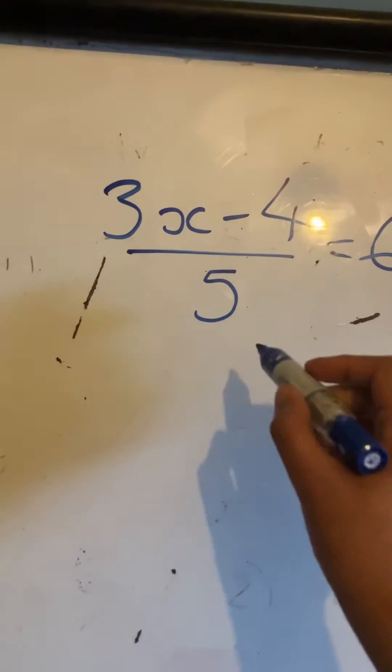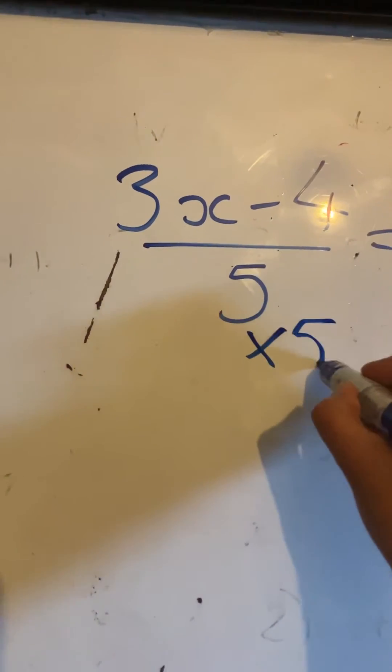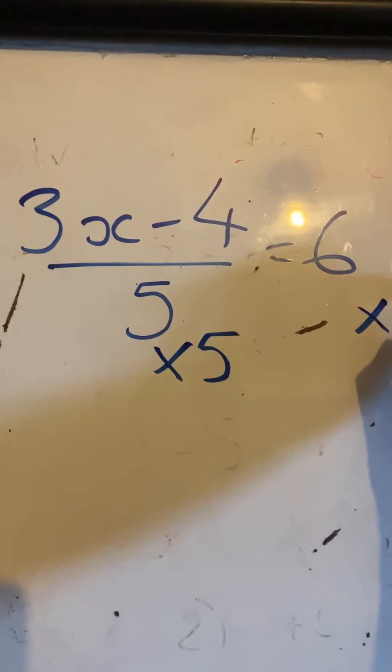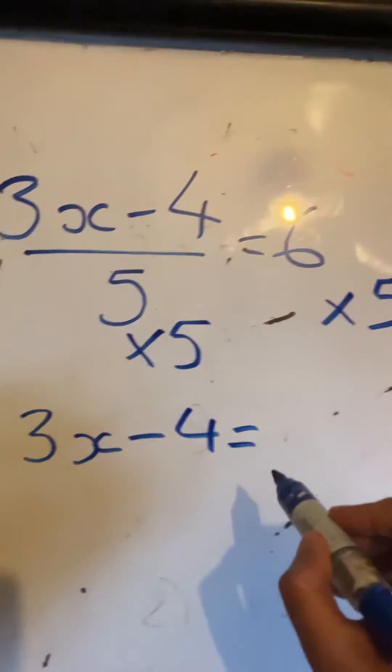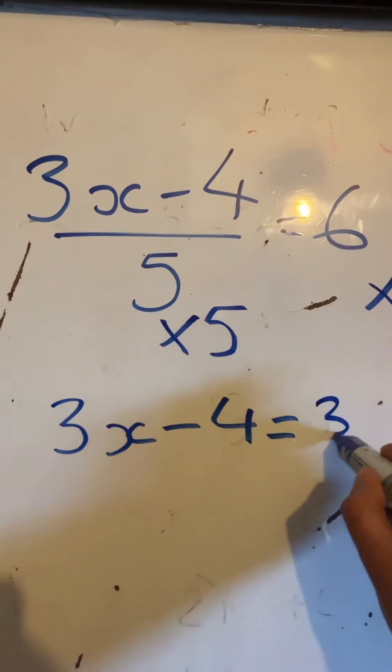So the first step here is to multiply both sides by 5. So we have 3x subtract 4 is equal to 6 times 5 which would be 30.